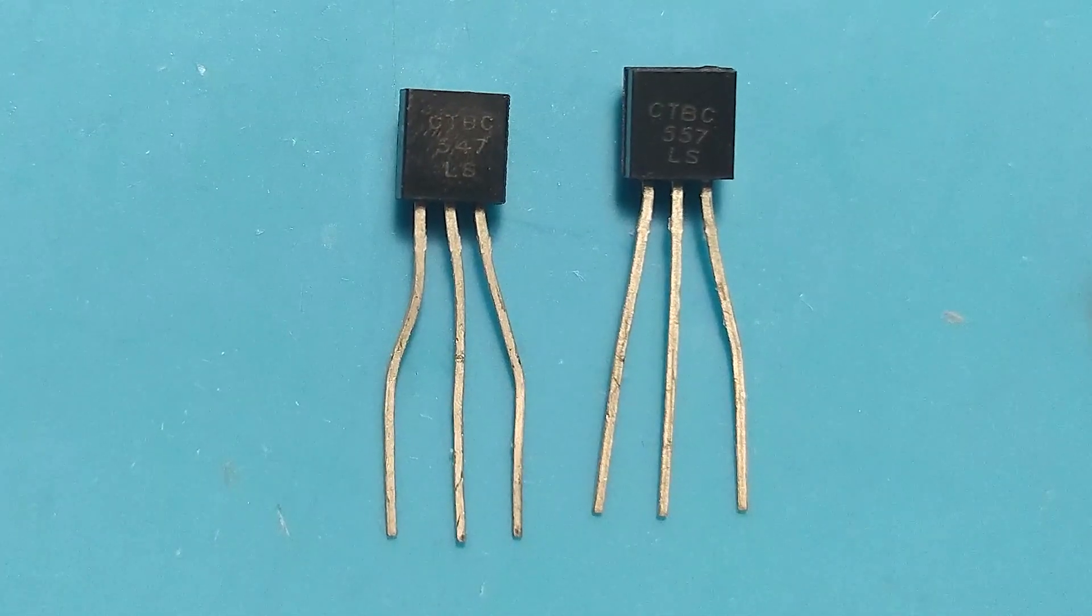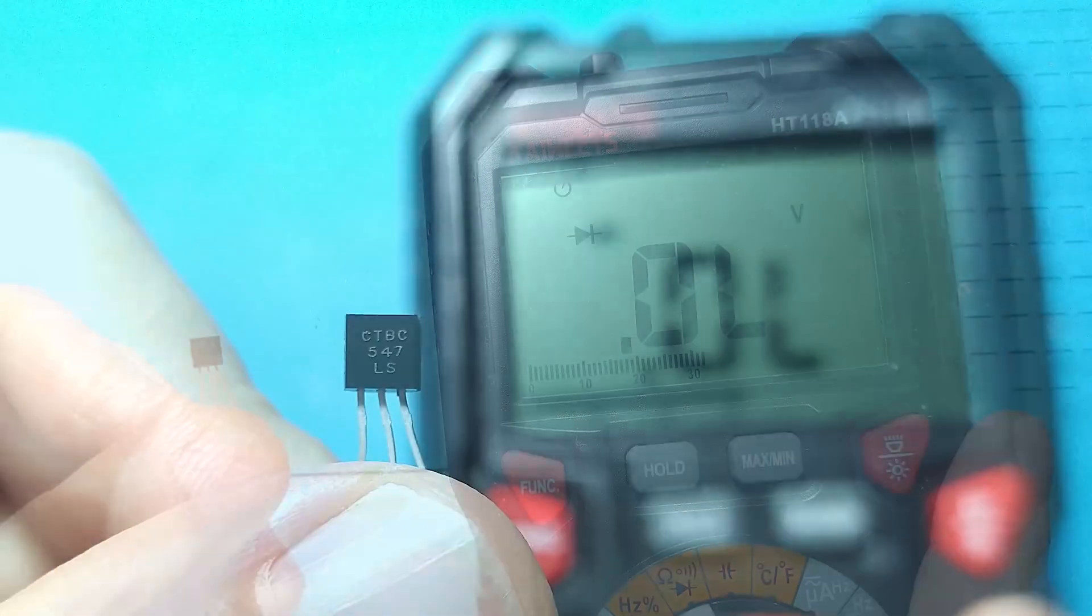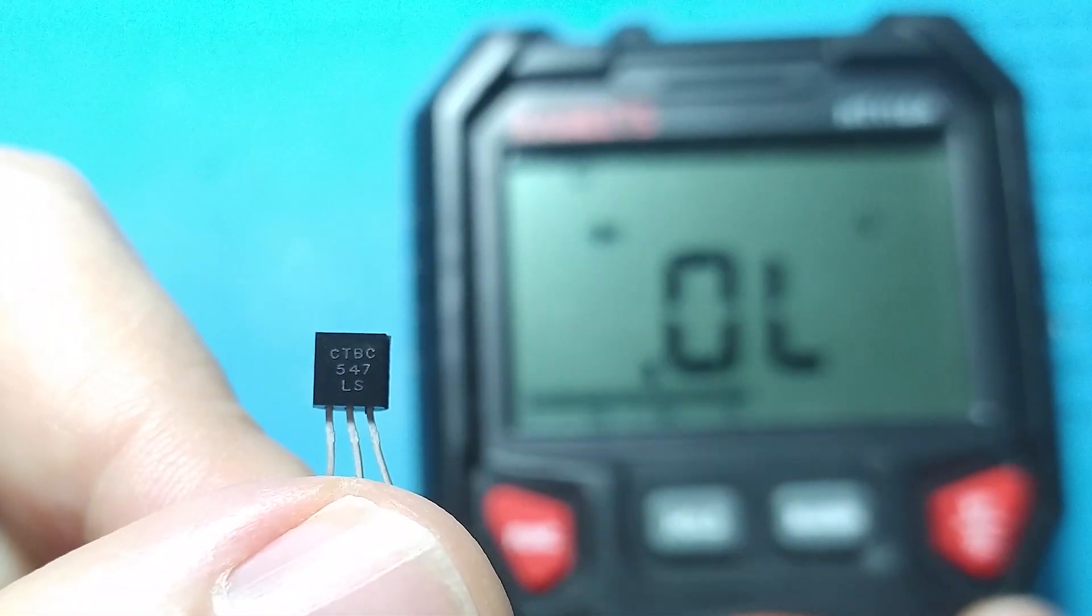Hello and welcome to Electro Tech Tips. In this video I will show you how to measure with the digital multimeter a small power bipolar transistor in TO92 capsule.